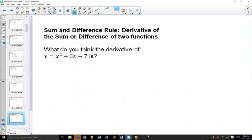Because the derivative of x squared is 2x. The derivative of 3x is 3, and the derivative of minus 7 is 0, so we wouldn't even have to write that. And the derivative of the entire function is just 2x plus 3.